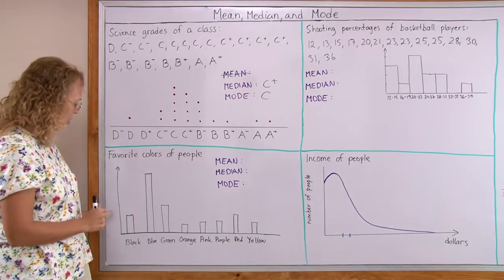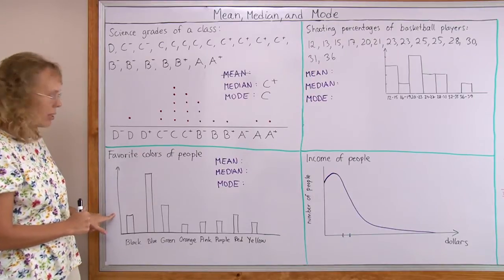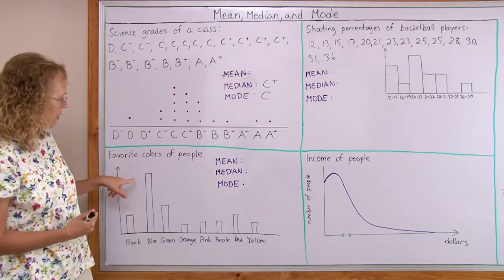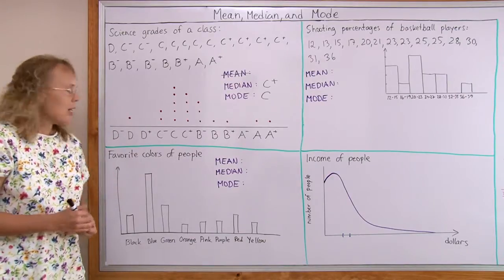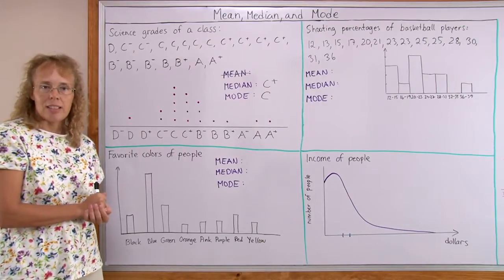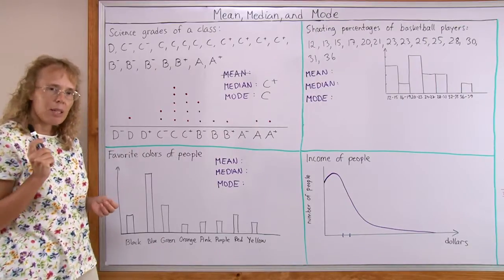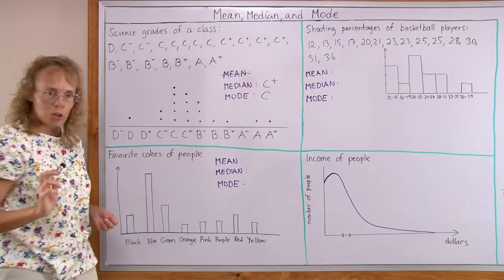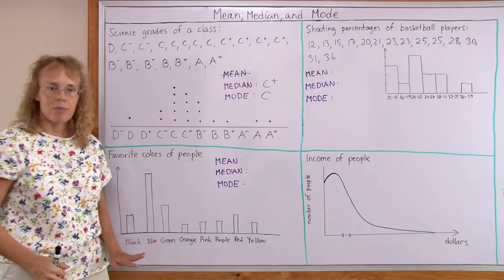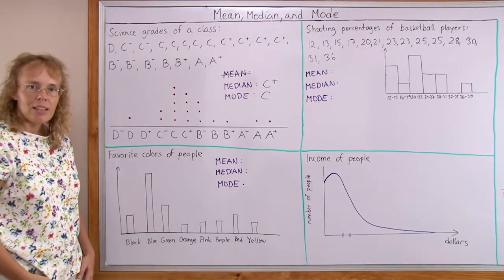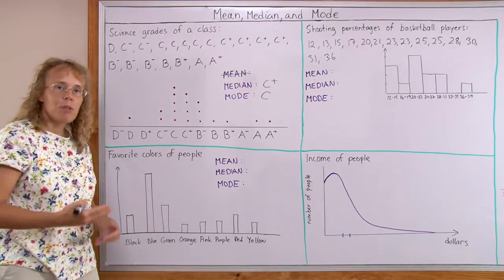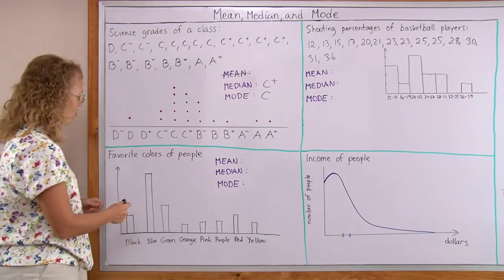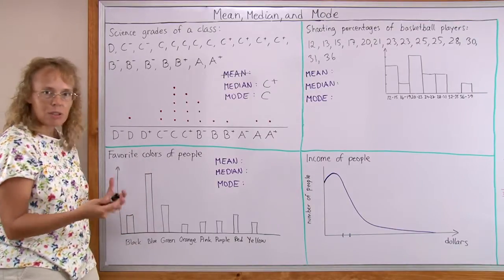It just so happens that even though there are numbers associated, like I said, maybe there was 200 people who said black, maybe there was 777 people that said blue, we cannot calculate anything from this data. Because think about what kind of list of values was used to make this bar graph. It wasn't numbers.